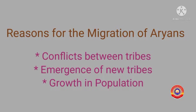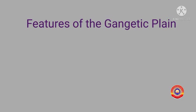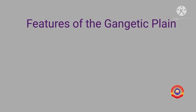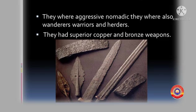Conflict between tribes, emergence of new tribes, and growth in population were the main reasons for the migration of Aryans to the Gangetic Plain. The main features of the Gangetic Plain are dense forest, fertile alluvial soil, and plenty of rain. Copper and bronze were used by the Aryans to make tools and weapons when they migrated to the Gangetic Plain.